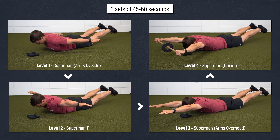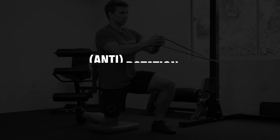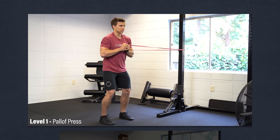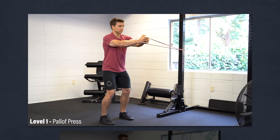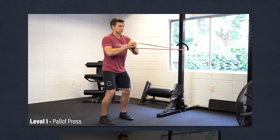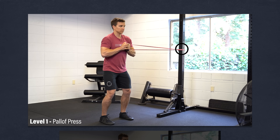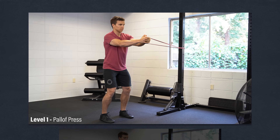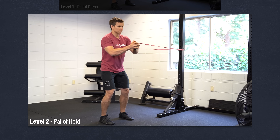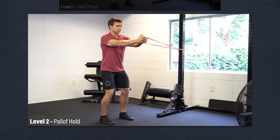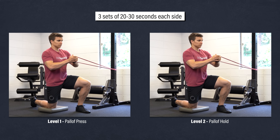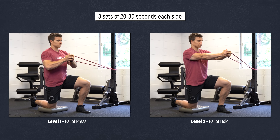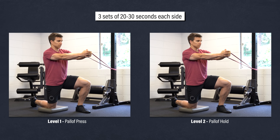Only extend your back as far as comfortable with each movement. Pallof Press — Level 1: Start standing with your hips and knees slightly bent and a band anchored perpendicular to your body at about chest height. Press the band out until your arms are straight, slowly return to the starting position, and repeat. For a Pallof Hold, hold the band out the entire time. Increase band resistance or step further away to progress. My preference, if tolerable, is to perform these in a half-kneeling position. Aim for three sets of 20 to 30 seconds per side.